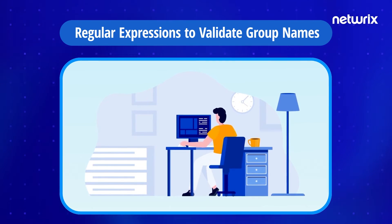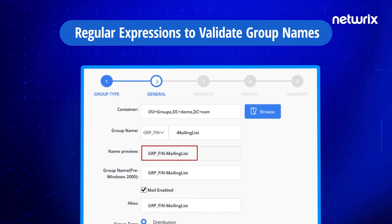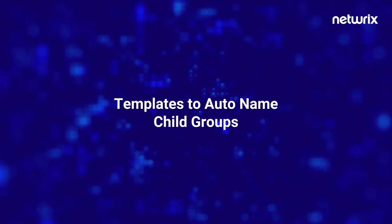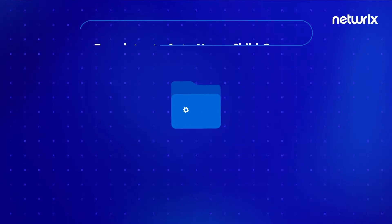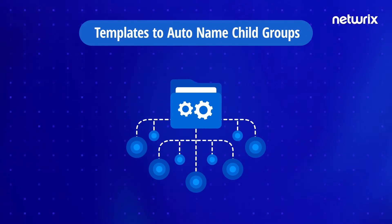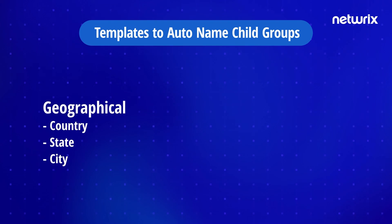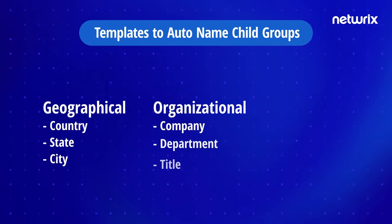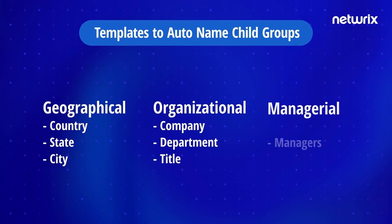Regular expressions are used to validate data and ensure it is in a specific format. You can leverage regular expressions to validate group names, ensuring that the names follow a standard pattern with Group ID. For example, you can apply a regular expression that accepts alpha characters and group names with capitalized first characters.